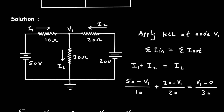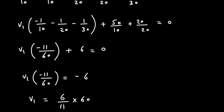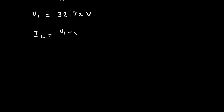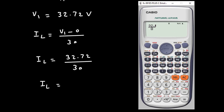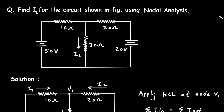We got V1 equals 32.72 volts, and now we have to find IL. IL equals (V1 minus 0) divided by 30, which is 32.72 divided by 30, equals 1.09 ampere. So IL equals 1.09 ampere is the answer. Install the app from the link in the description below for more practice problems and solutions.